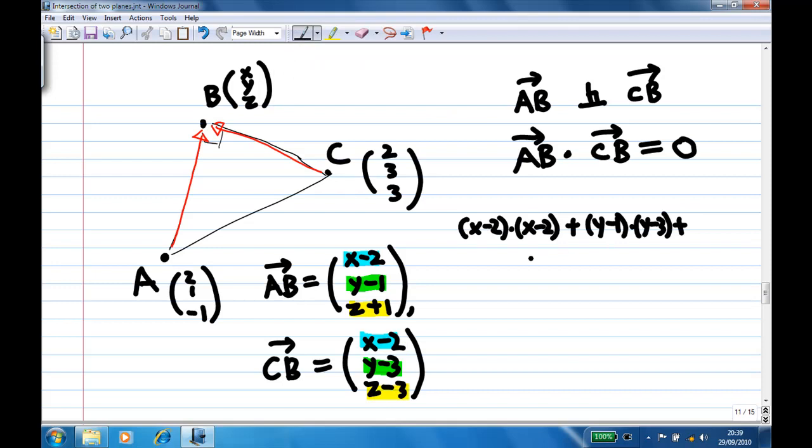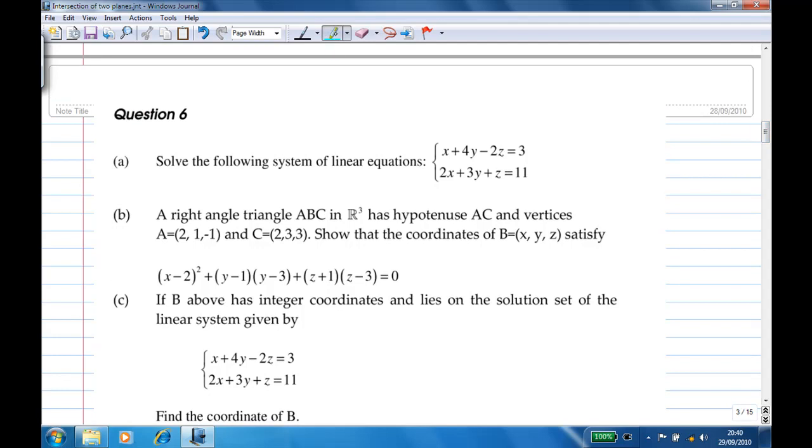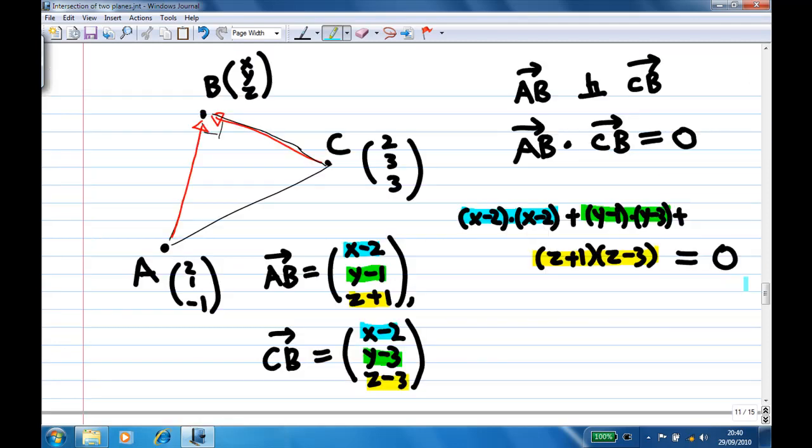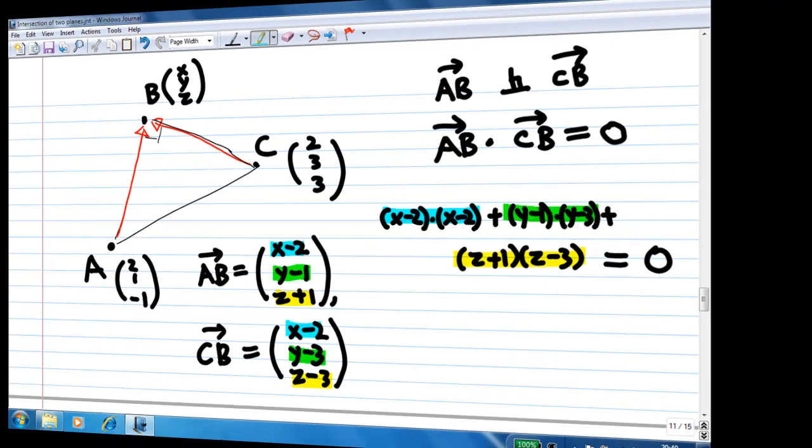So I will get z plus 1, z minus 3 must give me 0. This is how you find the dot product. The dot product is given by this expression: x minus 2 squared plus y minus 1 times y minus 3 plus z plus 1 times z minus 3 equals 0. And we have achieved that in this equation. That's all for the recording. Thank you.